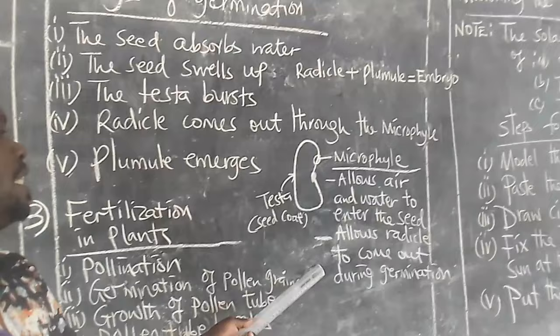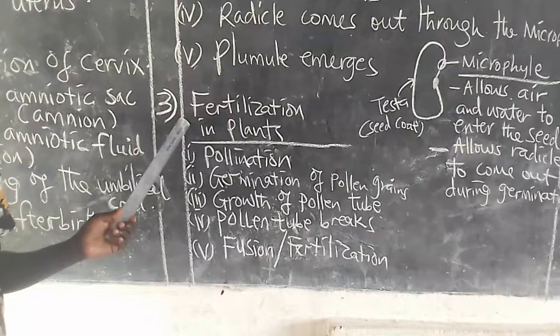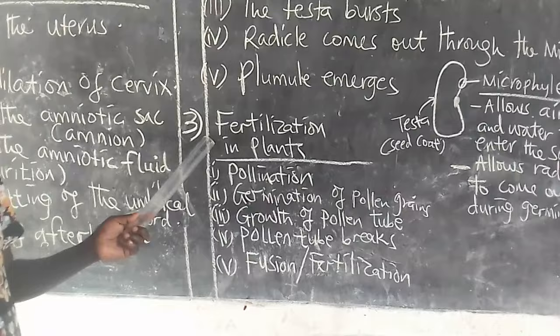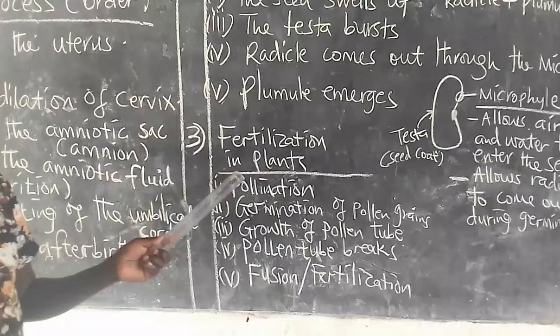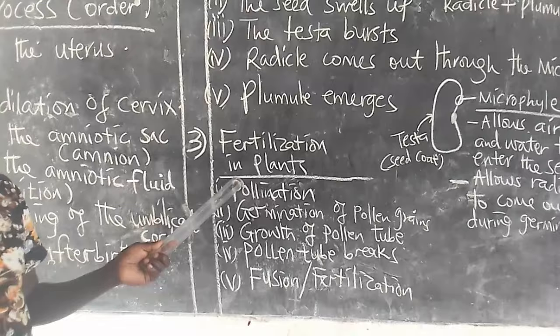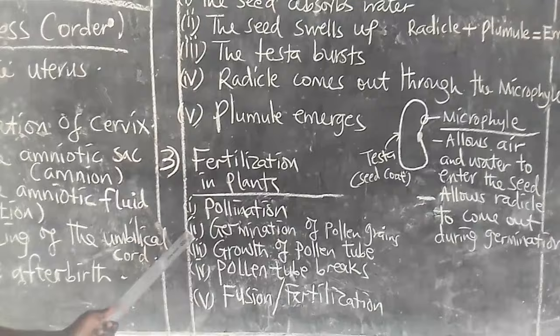Number 3: fertilization. Fertilization in plants takes place in the ovary. Steps followed during fertilization in plants: number one, pollination; number two, germination of pollen grains — which occurs at the stigma.